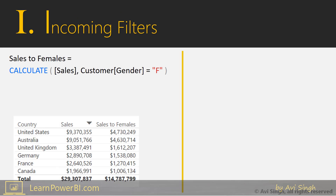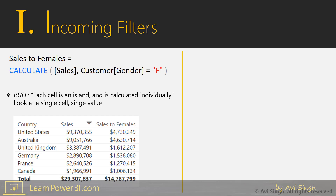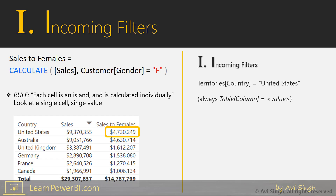Let's look at Step 1: detect the incoming filters. Remember the rule is always that you focus on a single cell — each cell is calculated independently. So when you're trying to understand a measure, pick out a specific cell. In this case, that's the highlighted cell we have selected, and for this one we can say that the incoming filter is Territories[Country] equals United States. Always try to think of it in terms of table column equals value.